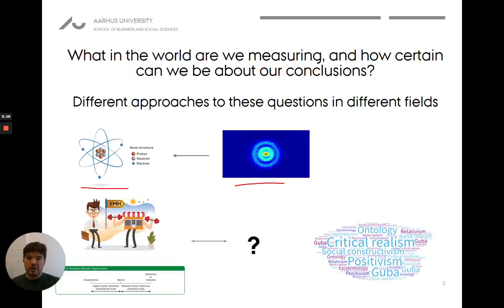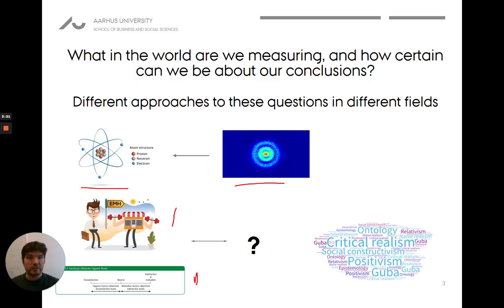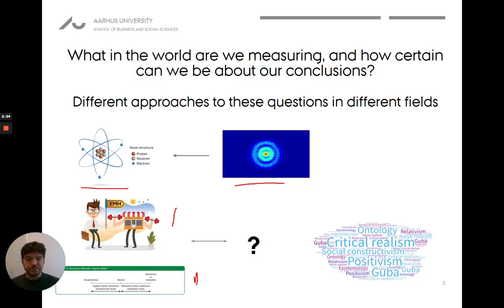Consider the efficient market hypothesis or any theory on motivation — we can't to the same clear degree say, look, this is where the essence of motivation is. We can't point to any place in the human body, whether in the consciousness or physically, and say this is what motivation is. It's just a different kind of construct, a different thing.